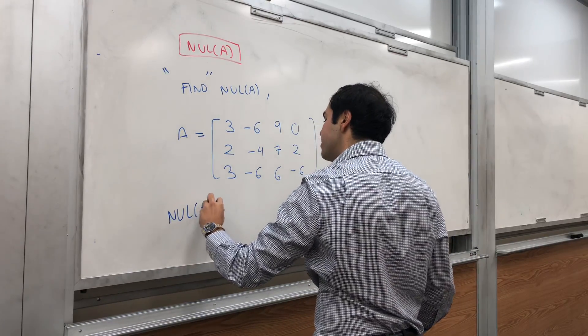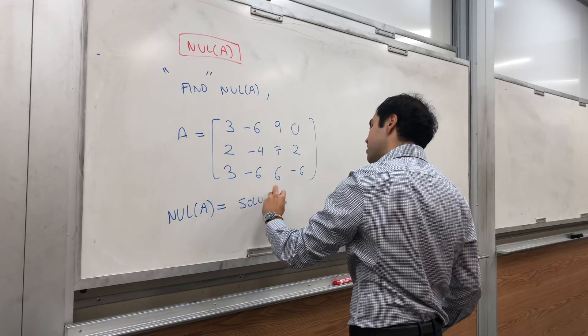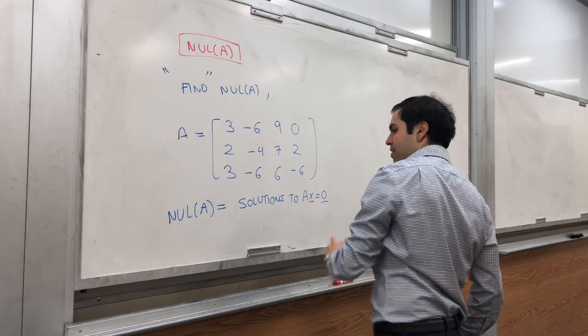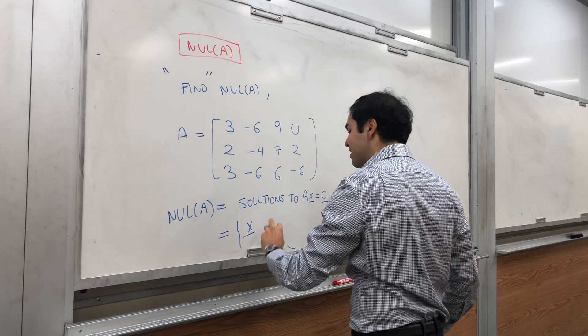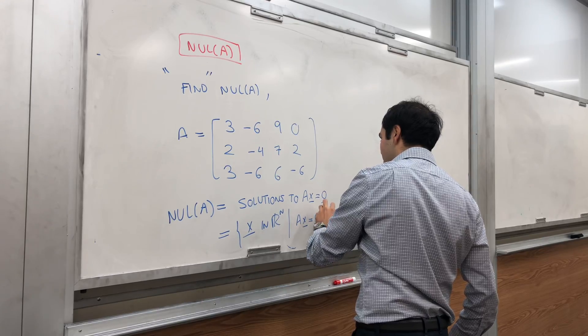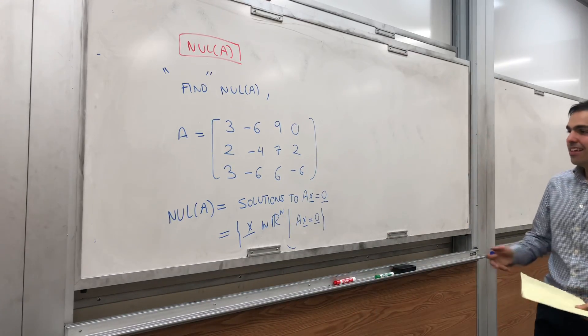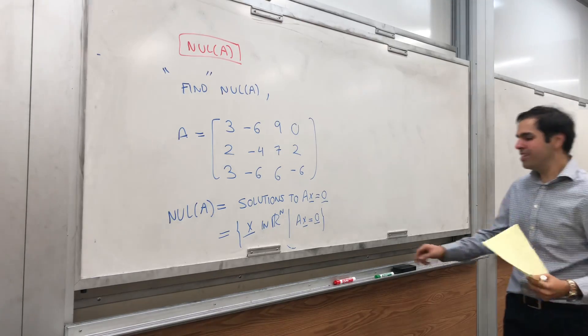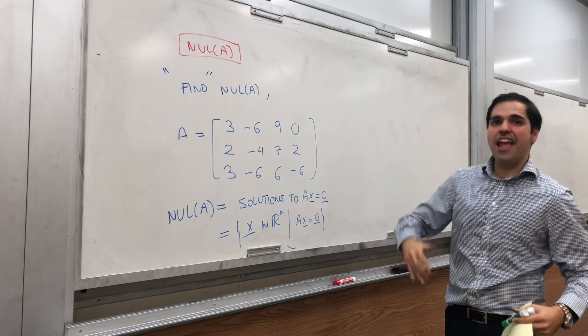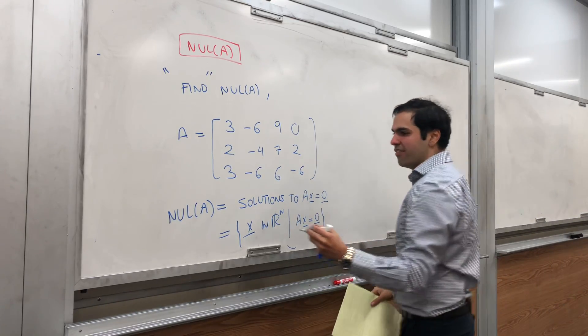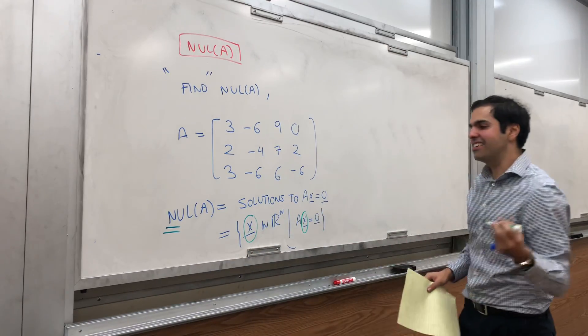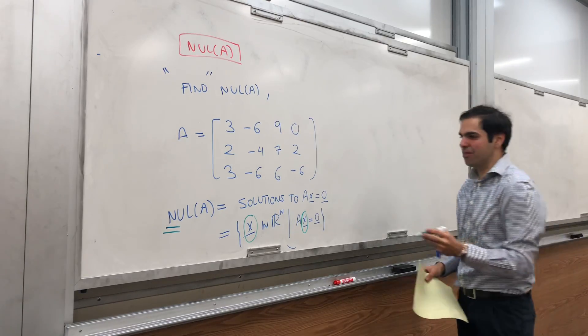So, null of A, all this is, is just the solutions to AX equals zero. Or in other words, the set of X in Rn, where AX equals zero, where A is an M by N matrix. And in particular, the thing that confused me a lot when I took linear algebra, you're usually used to outputs, right? Like AX equals to B. But, null space of A, as in N, it deals with the inputs.